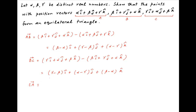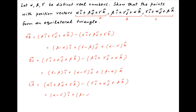Vector ca, which is equal to the position vector of point a minus position vector of point c, is equal to alpha i plus beta j plus gamma k minus gamma i plus alpha j plus beta k. This is equal to alpha minus gamma times i plus beta minus alpha times j plus gamma minus beta times k.